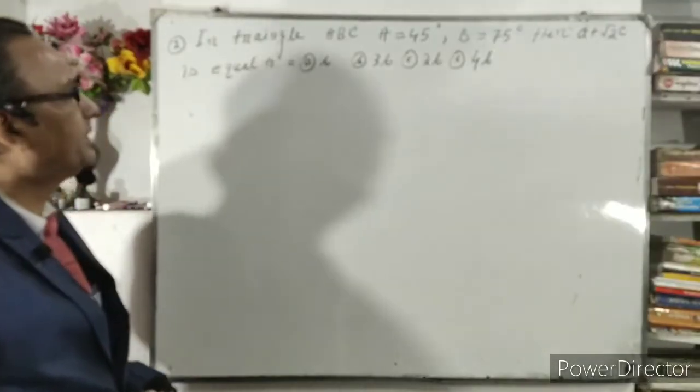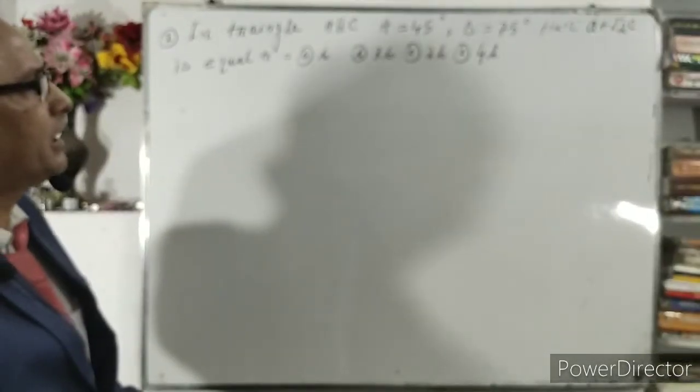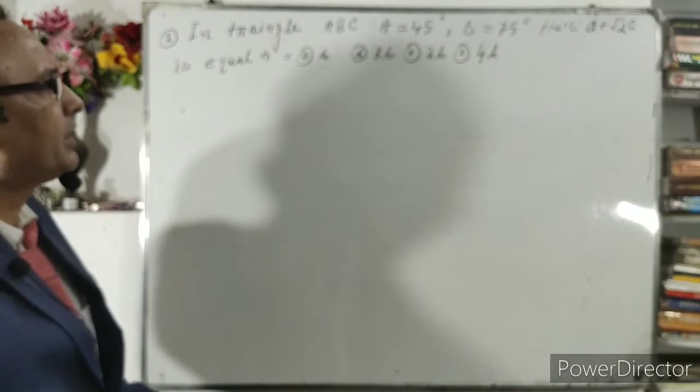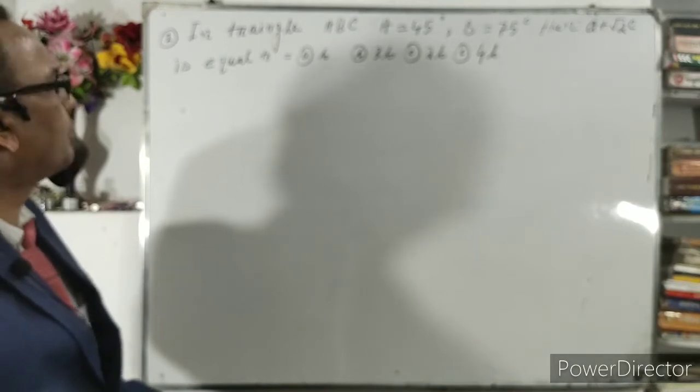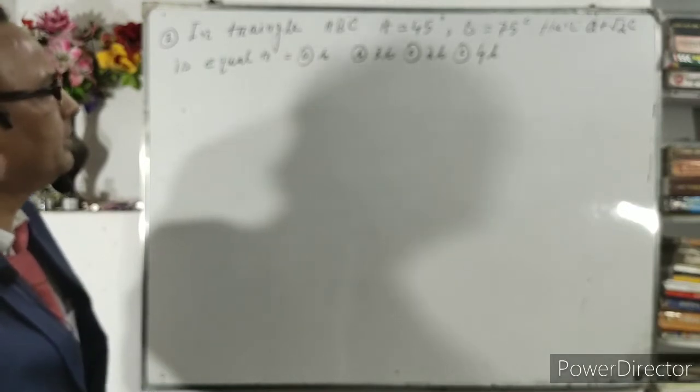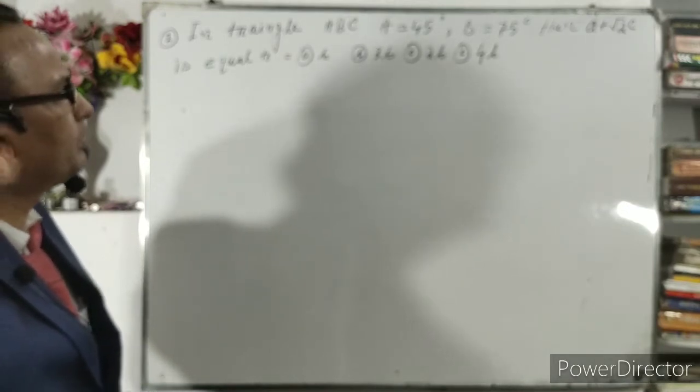A, B, C. A equal to 45 degree, B equal to 75 degree. A plus D, A plus root 2C is equal to B. 3B, 2B, 4B.